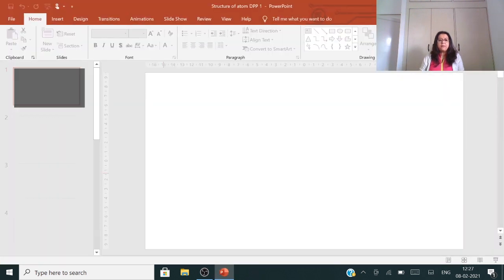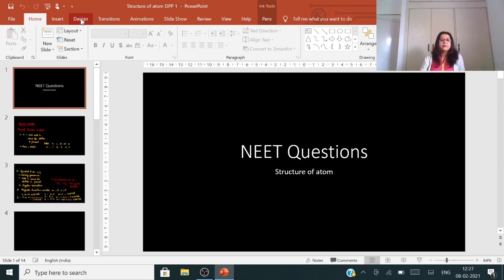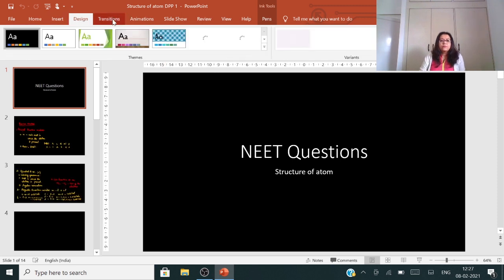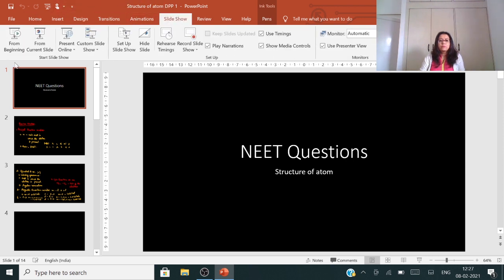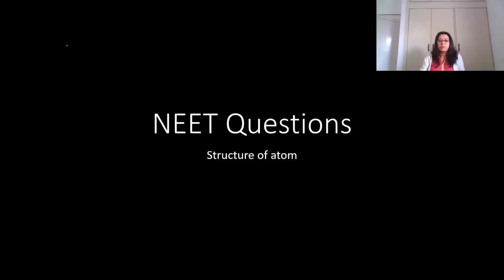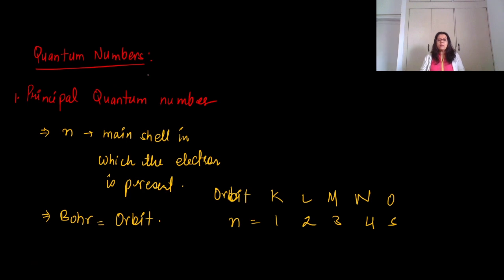Structure of Atom, DPP number 1. These are NEET questions on Structure of Atom which we are going to start over here. Before that, let me tell you about quantum numbers. First, you have the principal quantum number, which is n. It was given by Bohr. It is the main shell in which the electron is present.